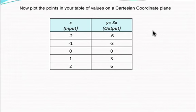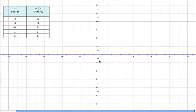So, now, the last step is to plot points in your table of values on the Cartesian coordinate plane. Our first point is a, and we're going to call that negative 2, negative 6. And we're going to plot that on the graph. You don't need the letter in there. It's just for point of reference.